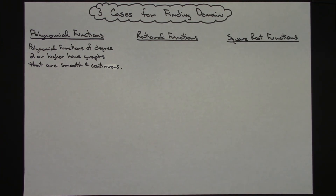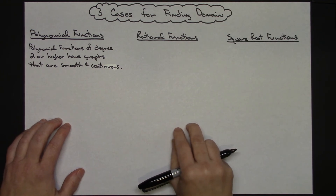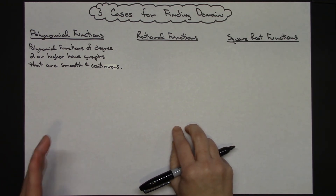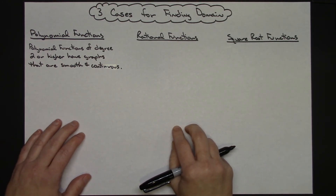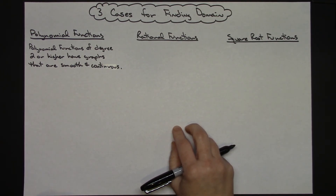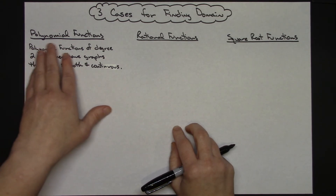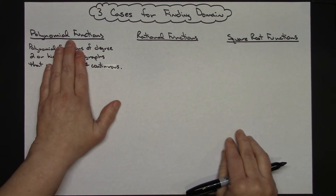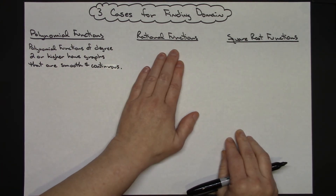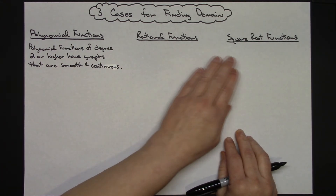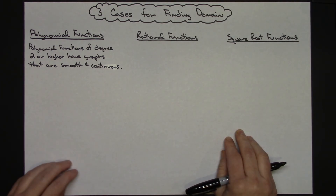Today I'd like to take a look at three cases for finding domain. We can take a look at just three different types of functions here, and this will pretty much take care of anybody that would be in an Algebra 2 or a PreCalc class. You've got polynomial functions, rational functions, and square root functions.